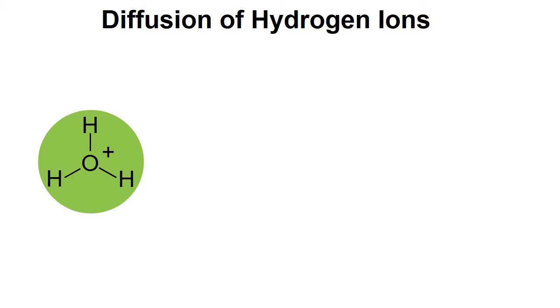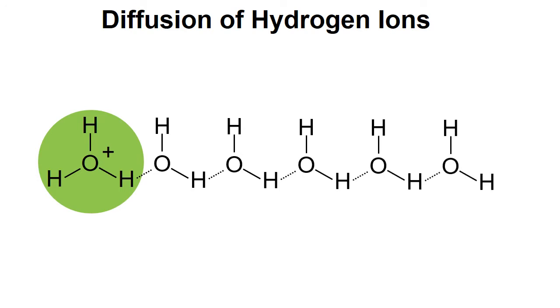So first of all let's consider the diffusion of hydrogen ions. Hydrogen ions don't exist just as a single proton in the solution; they actually exist as a hydronium ion as shown here. And let's consider now this being hydrogen bonded to some other water molecules in the solution.